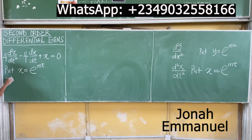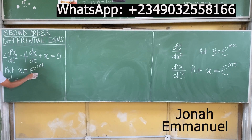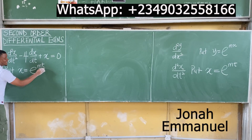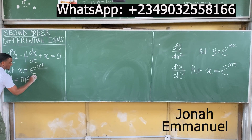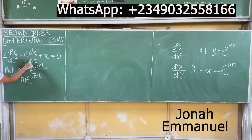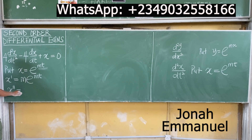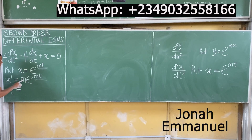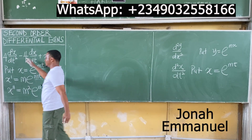Let's get x prime. x prime, which is the same as dx/dt — differentiate mt with respect to t to give you m. So it becomes m times exponential mt. That's x prime. Now let's get x double prime, which is the same as d²x/dt². Simply differentiate mt with respect to t to give m, then m times m gives m squared exponential mt. This will always be your answer.